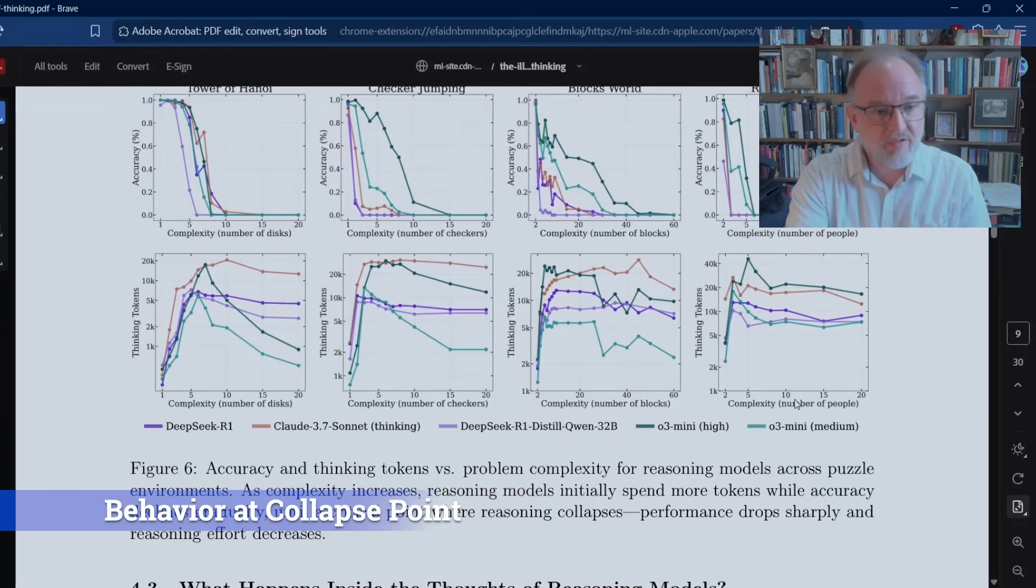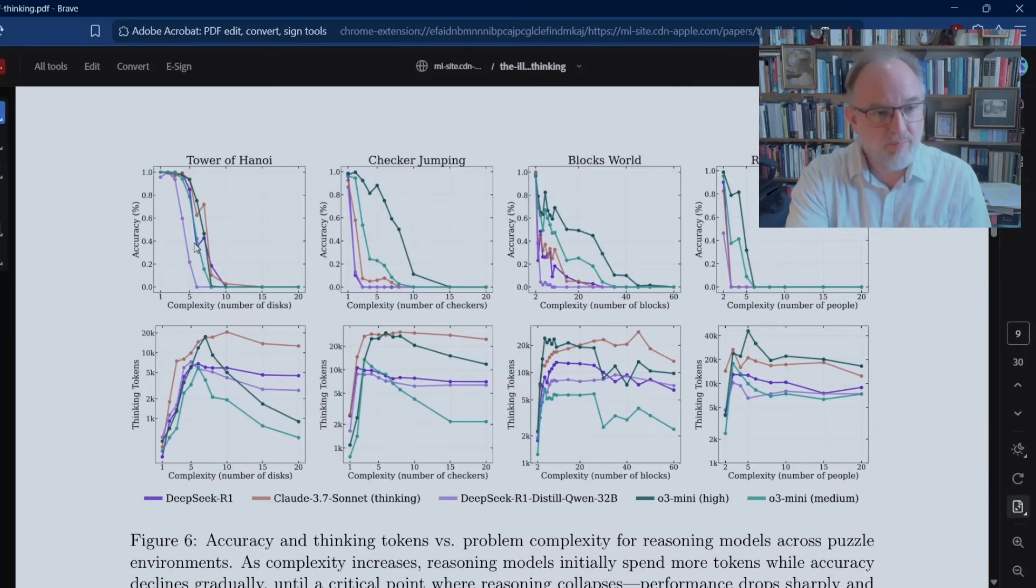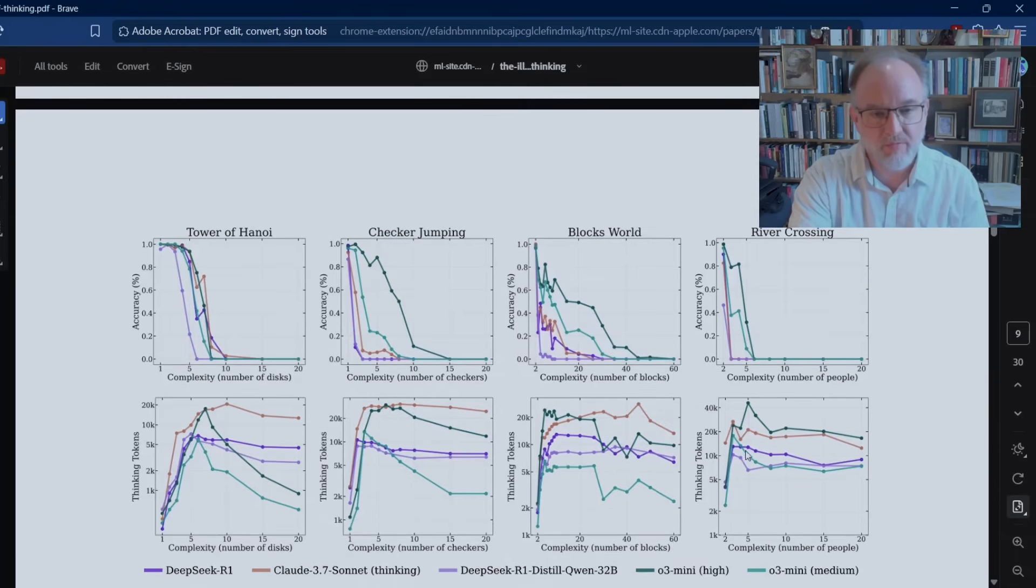I'll give you a look at some of these: accuracy and thinking tokens versus problem complexity. Keep in mind here for Tower of Hanoi, here's the collapse point for all the different models, a place where their accuracy falls between 5 and 10. And what do we see? Between 1 and 5, steep increases in their use of thinking tokens. But then, as the complexity continues to rise, they go past the collapse point, they begin investing less and less, sometimes far less, token power into trying to crack these 10, 15, and 20 level disk problems. Something similar happening here, a falloff in resource use right after the accuracy collapse point. Same with blocks, similar for river crossing as well. Although, curiously here, a little bit more of a flat line for some of these models. Looks most steep, the drop with Tower of Hanoi.